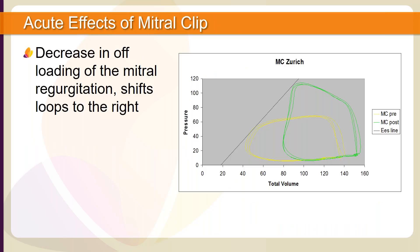In this example we compare the loading effects after the mitral clip procedure. The yellow PV loop is representative of baseline and the green PV loop is post mitral clip. In the post PV loop we see an immediate decrease in the offloading of the mitral regurgitation, and therefore we see a shift of the loops to the right according to the end-systolic elastance line.